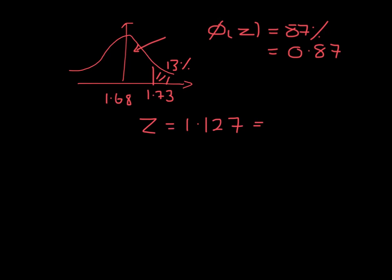And that has to equal the X value minus the mean divided by the standard deviation. So the standard deviation will be 1.73 minus 1.68, which is 0.05, divided by 1.127.